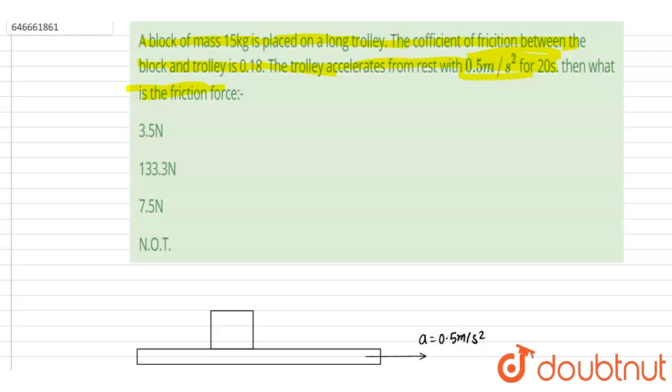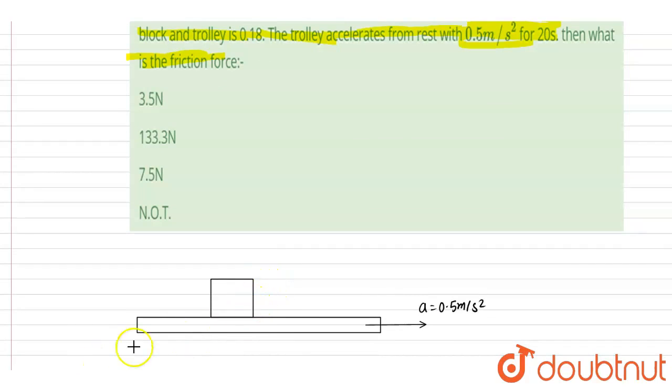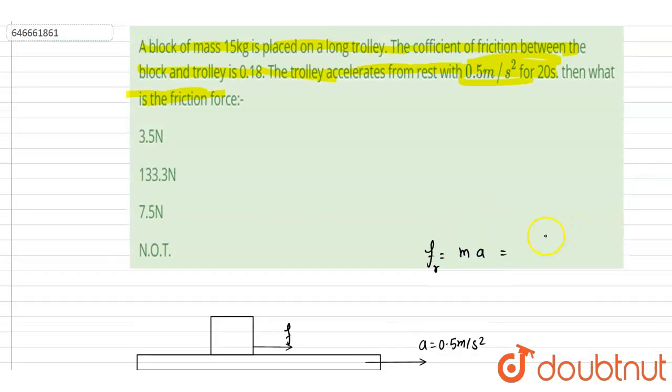Force required so that they could move together: since the block can only move in horizontal direction because of the friction force, the required friction here is mass of the block times acceleration of the trolley. Mass of the block is given, it is 15. Acceleration of the trolley is 0.5. So it is 7.5 newton.